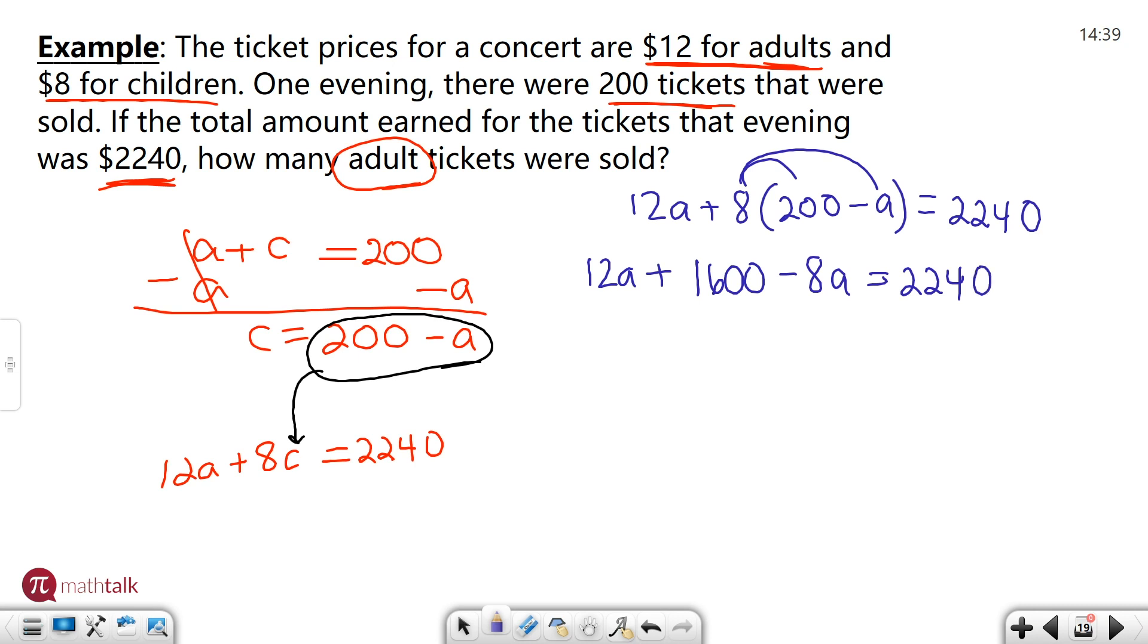Now I have an equation where the only letter or variable is A, which is good because then I can use it to solve for that one variable. I do need to combine like terms though. So I have 12A's and I'm subtracting 8A's so that means I have 4A's left. I'm just going to rewrite this a little bit. Now I have a two-step equation like the last example.